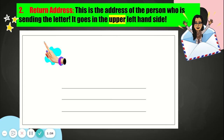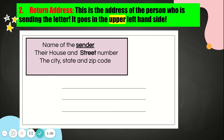Once you have the recipient address, you need to add the return address all the way in the left hand corner, and this is your address if you're the person sending the letter. It has your name and the same information.